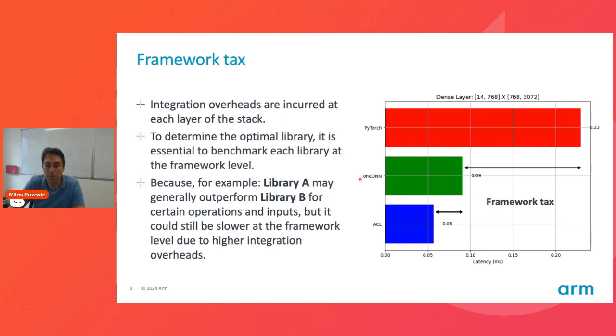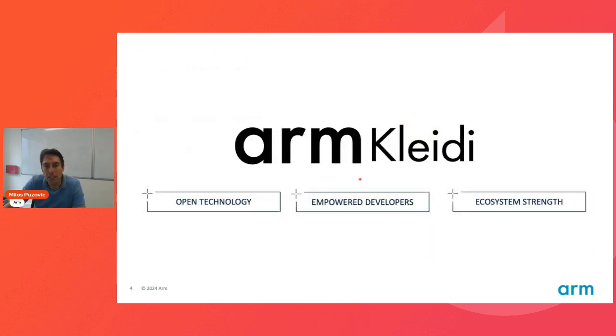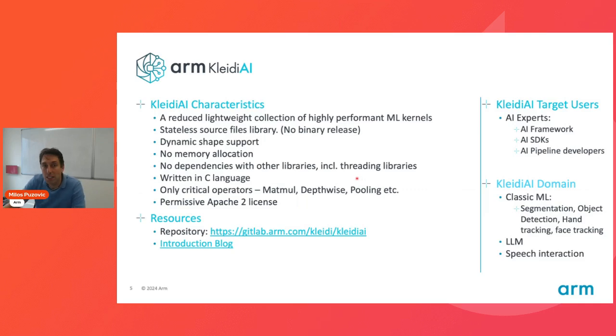In order to address this problem, we at ARM have introduced a new library called Kleidi, which is an open technology, which we believe is going to empower developers to simplify the integration of ARM in-core accelerators into their frameworks. And as a result, it is going to enable much bigger strength of the ecosystem. So what Kleidi is, it is a collection of lightweight, very highly performant ML kernels. It comes with no binary release, so it is a stateless source-first library, which supports dynamic shapes, no memory allocations, and what is the most important, it doesn't have dependencies on other libraries.